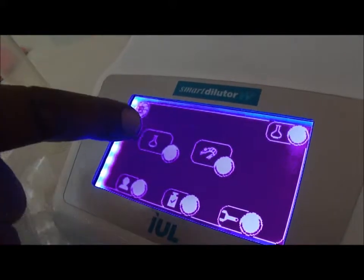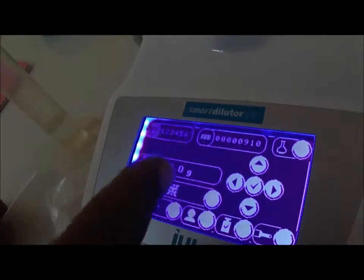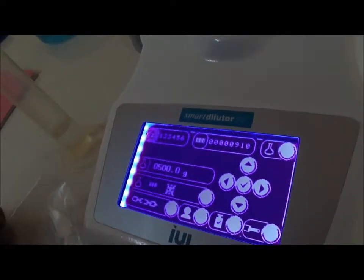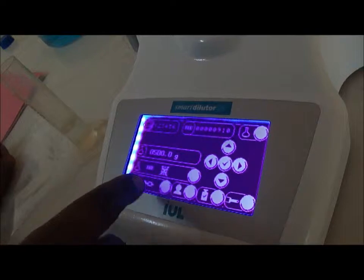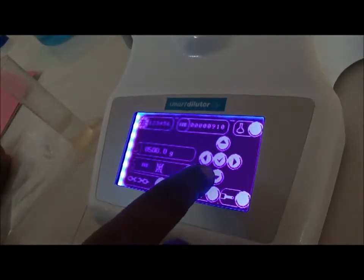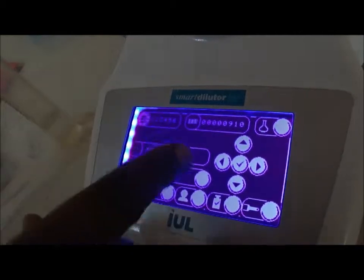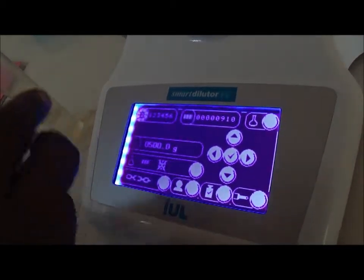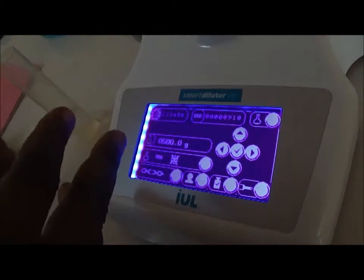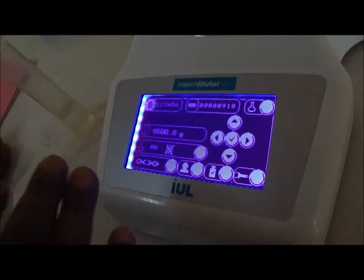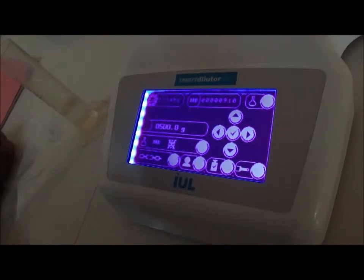Then you can put here dilution or dispensing. In our case, we have selected this one and we enter in the menu where you can give a number to your sample, an ID. If you put down this triangle, you move between the fields and you have in the middle here where you put actually the final weight you want for the mixture of your diluent or the solution you want to mix with your sample by making a dispensing.